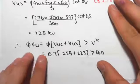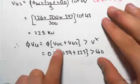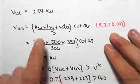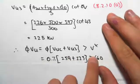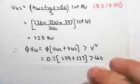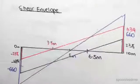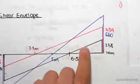Now, φ we said was 0.7. VUC is 259. And VUS is 225. So subbing those values in, that needs to be bigger than 660. I get the 660 from our shear envelope. 660 is the biggest shear.